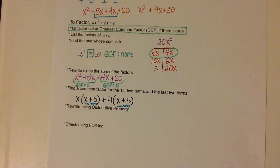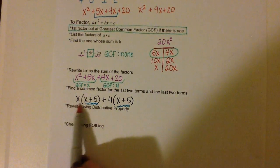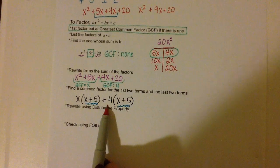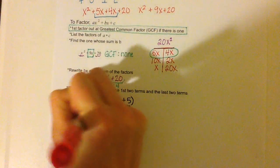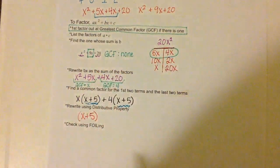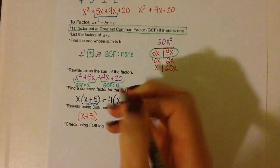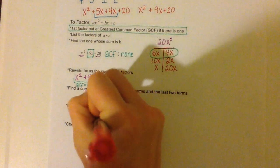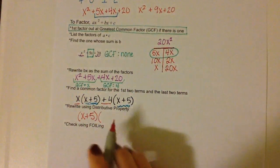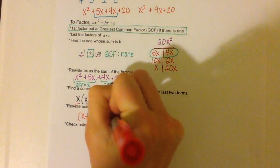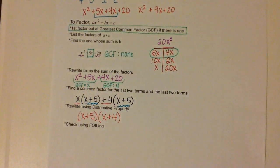So now we can rewrite these. We have (x plus 5) and (x plus 4) — the same factor on the inside. We can take (x plus 5) and keep that, times (x plus 4). That is our factored form — all we did was group them together.